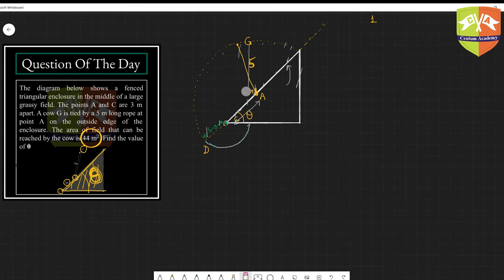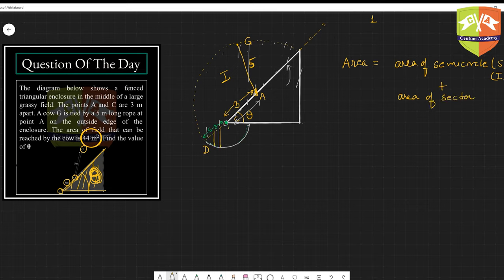Now let us find out the area. Area is given as 44. Let me clear this mess here. Now the total area swept by the cow will be area of semicircle with radius R, so with five, plus area of sector.